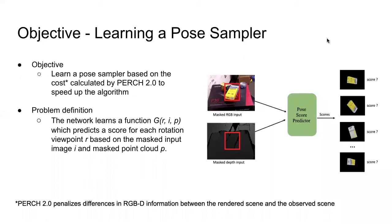Therefore, in this work, we aim to incorporate a neural network for learning the geometric features of the objects based on the cost calculated by PERCH 2.0, and to use that information as feedback to speed up the pose sampling. The cost here measures the differences in RGB information between the rendered scene and the observed scene.